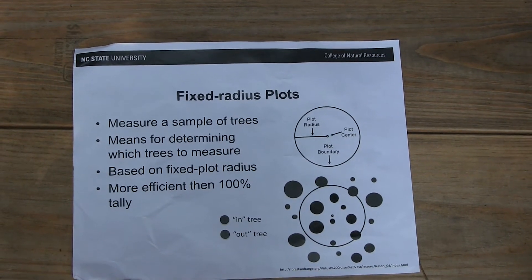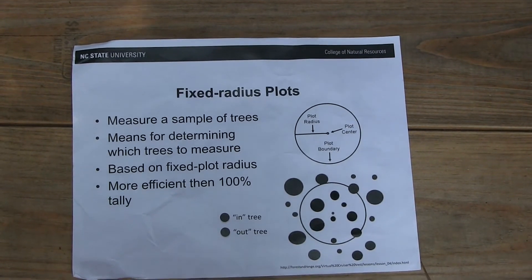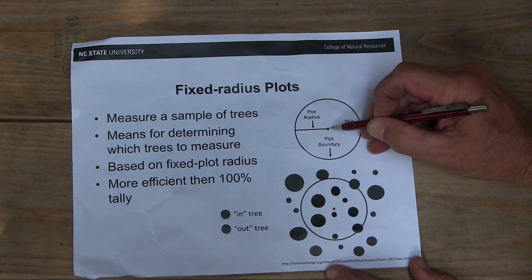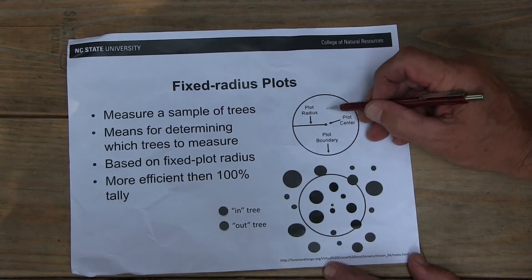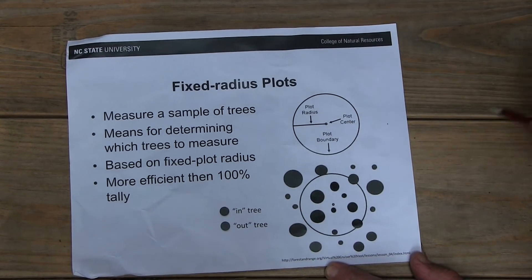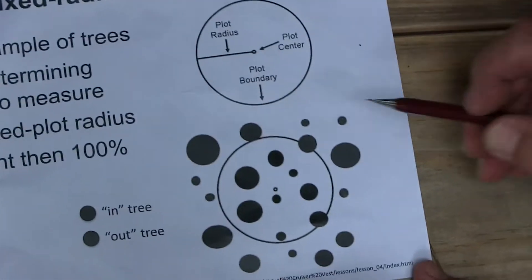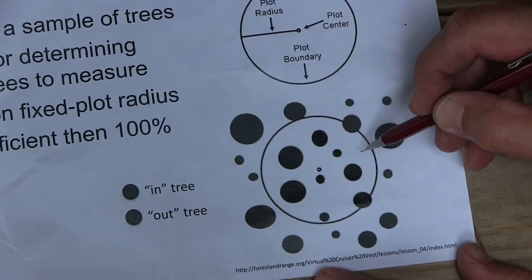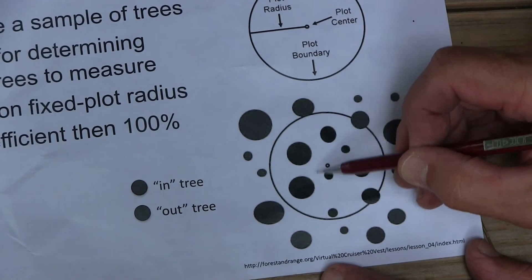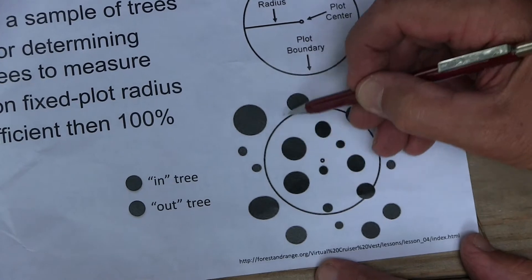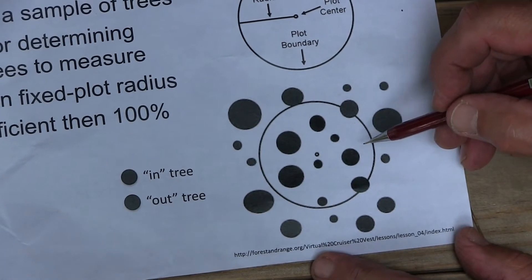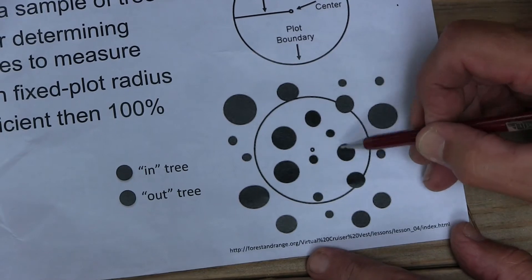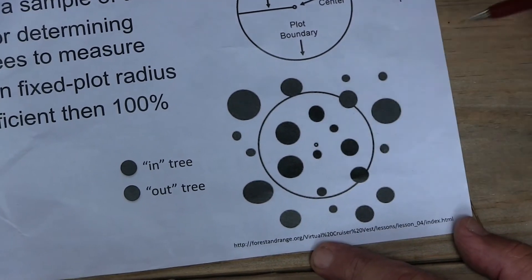If you're putting in a fixed radius plot to determine the trees to be sampled, you would establish a plot center and then determine every tree within a 37.2-foot radius all around. These are trees of different diameters on the diagram, and we can see which trees are in or to be counted. Any tree entirely within the radius of the fixed radius plot is considered "in" and is to be measured based on whatever the measurement criteria are. It looks like there are seven trees that are in.